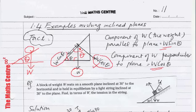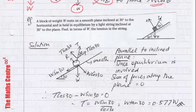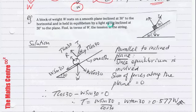So let's look at an example. Here we have a block of weight W that rests on a smooth plane inclined at 30 degrees to the horizontal. There's an object of weight W at 30 degrees, and it's held in equilibrium by a light string inclined at 30 degrees to the plane.